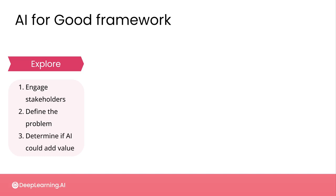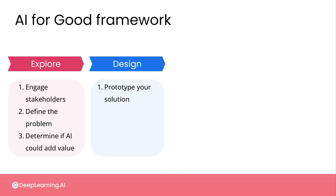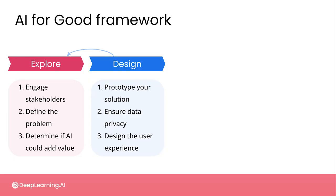Then, if your exploration of the project looks promising, you can move into the design phase, where you're prototyping your solution, developing your model strategy, investigating the data further, and thinking about how you ensure data privacy, as well as how potential users will be interacting with your system. It's possible that within the design phase, you'll realize that some of your assumptions coming out of the explore phase aren't holding up, and you'll need to go back and explore further, have more discussions with stakeholders, and maybe iterate on your problem statement. This can be an iterative process, and sometimes you might need to go back to a previous phase if you discover that you don't have what you need.